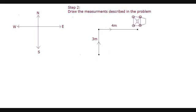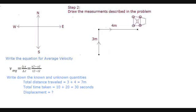Write down the equation for average velocity. Write down the known and unknown quantities. Total distance traveled equals 3 meters plus 4 meters which equals 7 meters. Total time taken equals 10 seconds plus 20 seconds which equals 30 seconds.